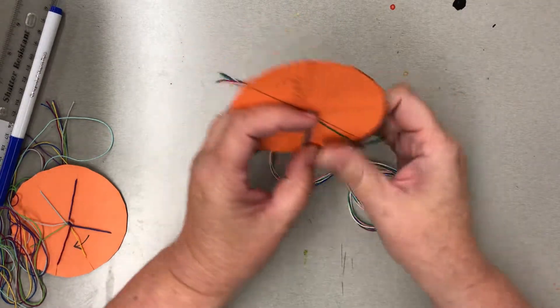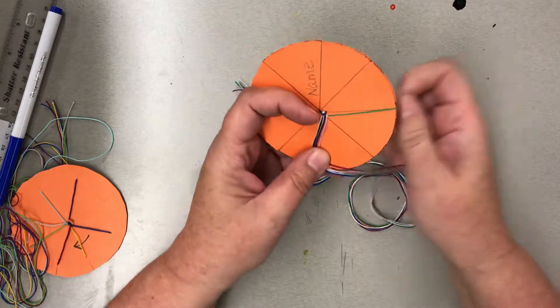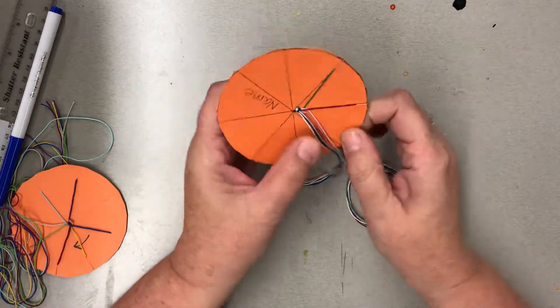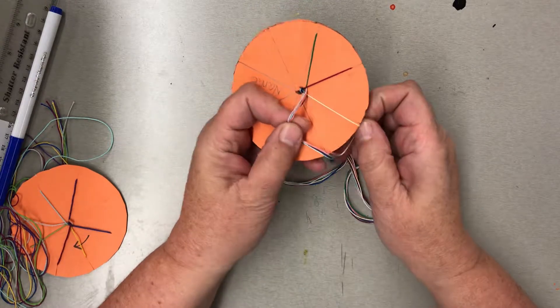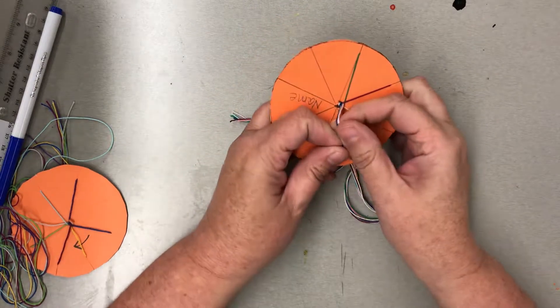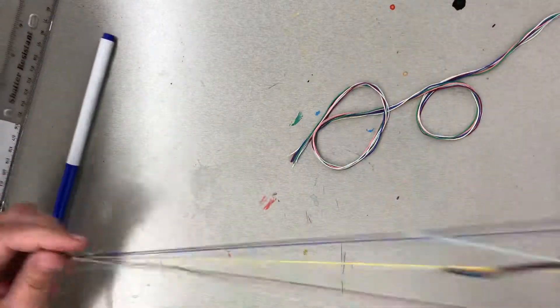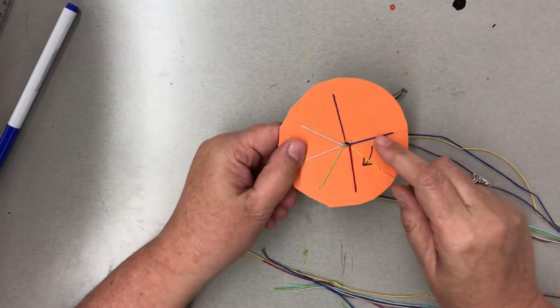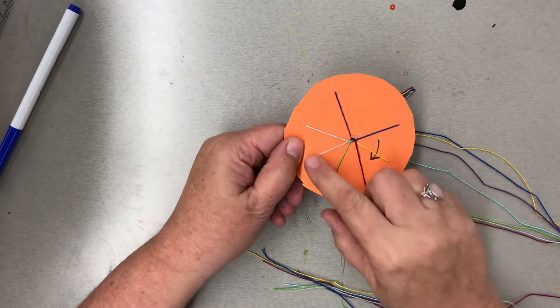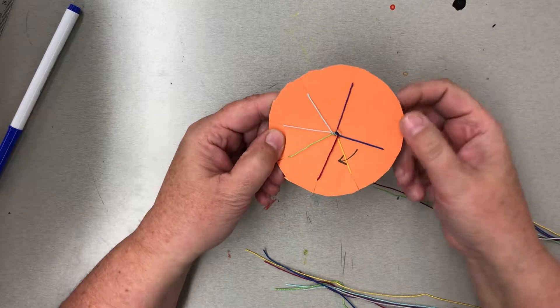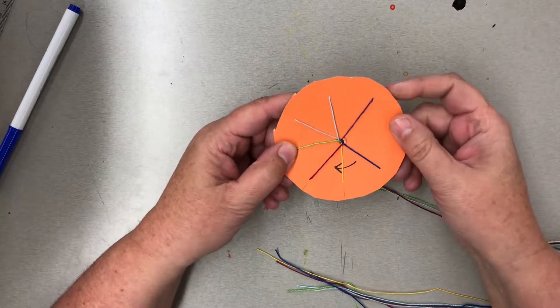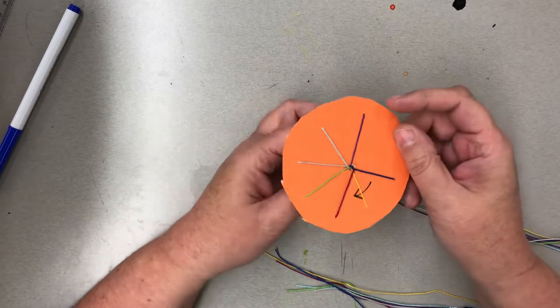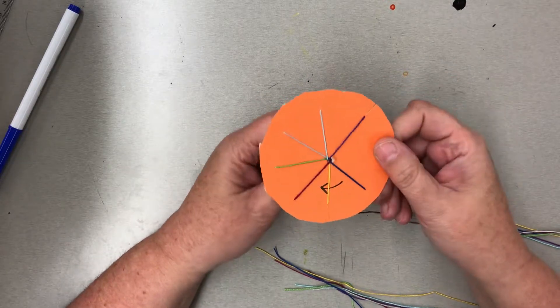Then you're going to stick one string through each slit that you cut in the cardboard. So it's going to look like this with all seven strings in a slit. You actually cut eight slits in your cardboard loom. You're going to have one left over, and that's okay.